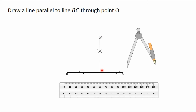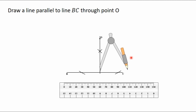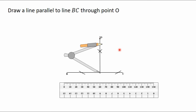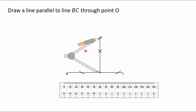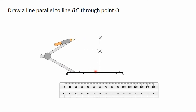After getting the perpendicular line to the line BC through the point O, you put the needle of the compass on the point of intersection of the two lines. Then you stretch the other part of the compass to the point O. So you put the needle of the compass on the point of intersection of the two lines, then you stretch the part holding the pencil to the point O. Doing this will give us the distance between the two parallel lines. Now that we have the distance between the two parallel lines, you move the needle of the compass from this point and you put it on any point on the line BC.